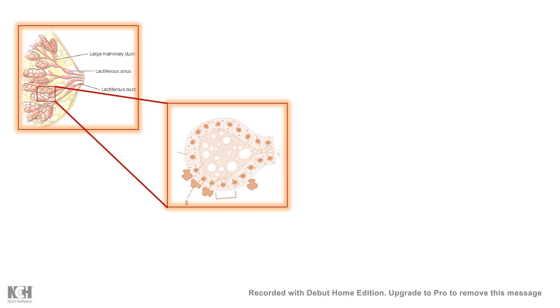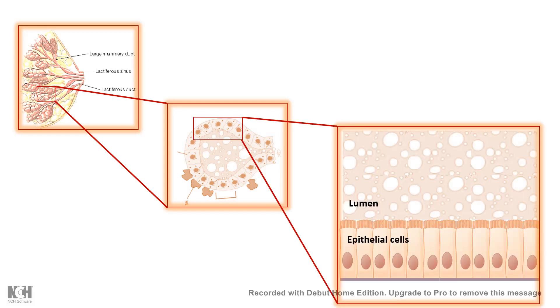We look at the breast, inside which there are mammary glands. Here is a zoomed-in version of the mammary gland, and if we zoom in further we can see the epithelial cells and the lumen where milk droplets are visible. The antibodies have to cross this epithelial surface to reach the lumen.